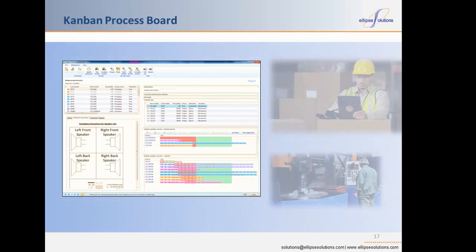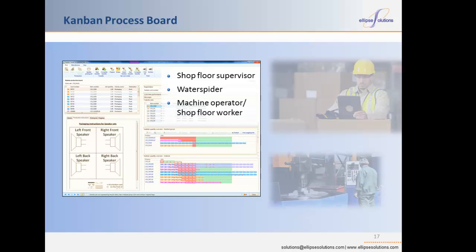After Kanbans are scheduled using the Kanban Scheduling board, shop floor personnel use the Kanban process boards to perform required transactions against the production Kanbans. The Kanban process board in AX 2012 specifically targets three shop floor user profiles. First is the shop floor supervisor, who needs a complete overview of what happens in a specific work cell and decides on priorities and sequences of jobs. Second is the water spider, who replenishes supermarkets on the shop floor, prepares handling units, picks material for Kanbans, puts away finished products, or moves semi-finished products to the next work cell or supermarket. Third is the machine operator or shop floor worker, who reports the start and end of jobs. The objective of the Kanban process board is to keep system interaction at a minimum while providing maximum visibility.